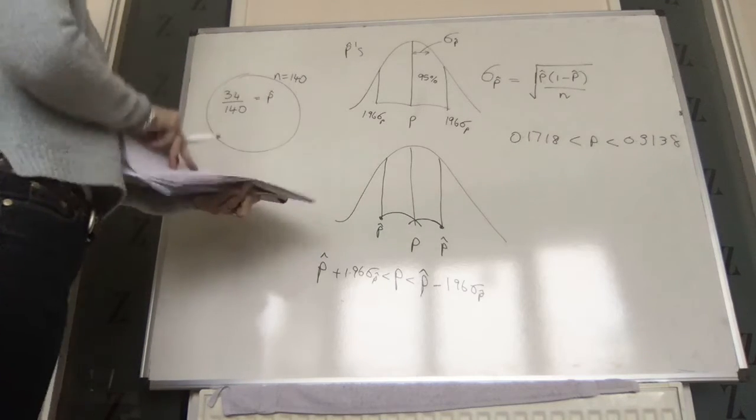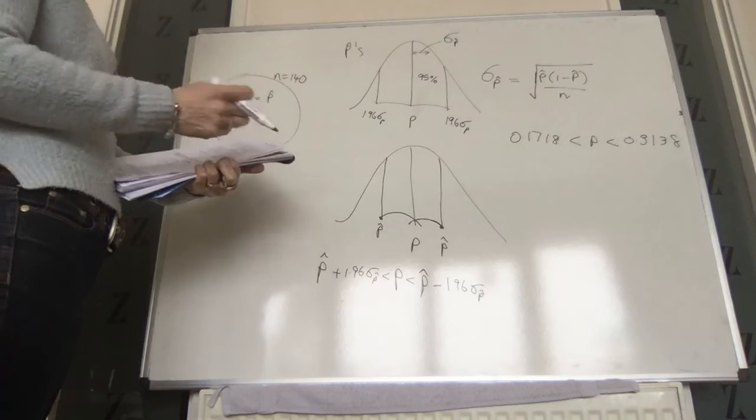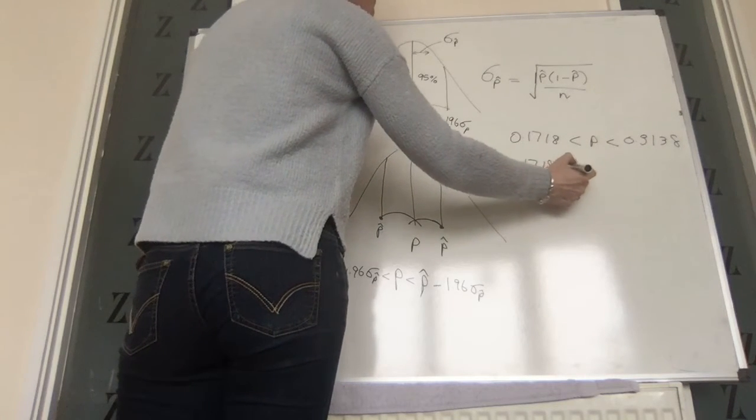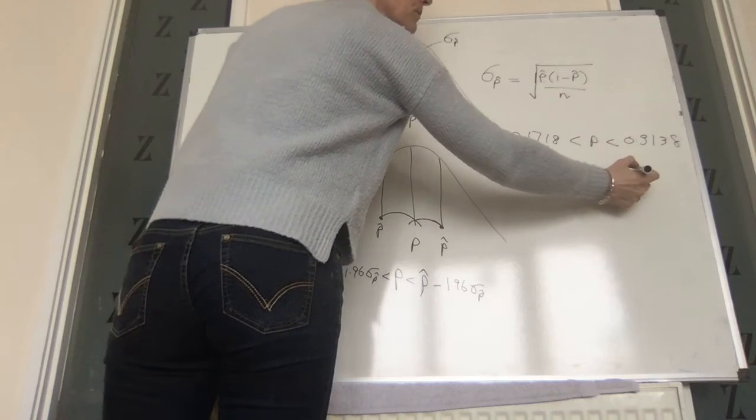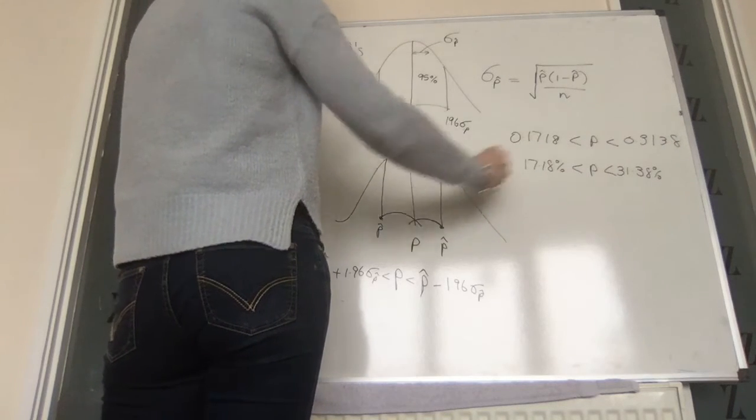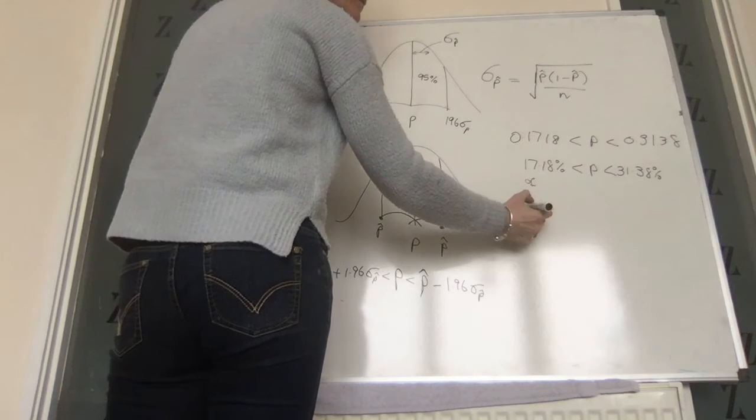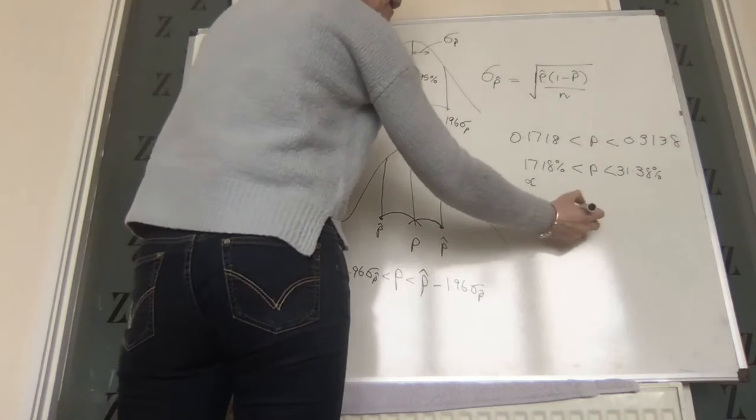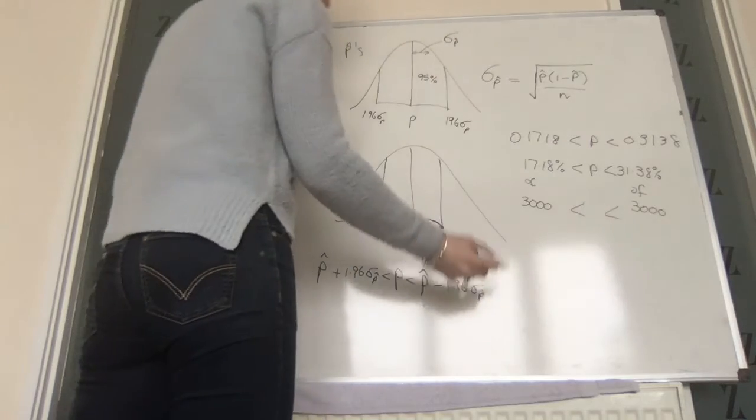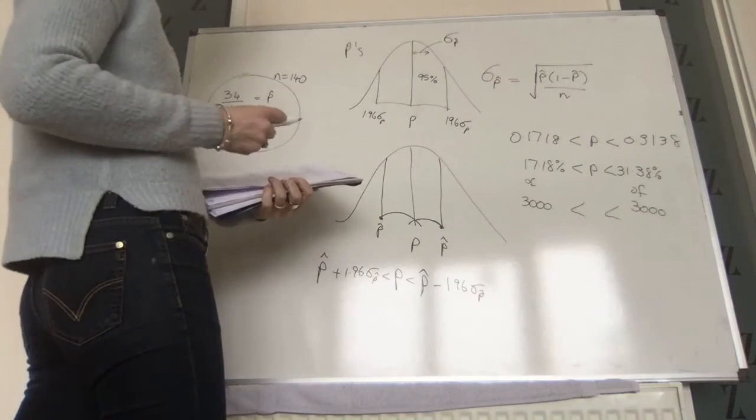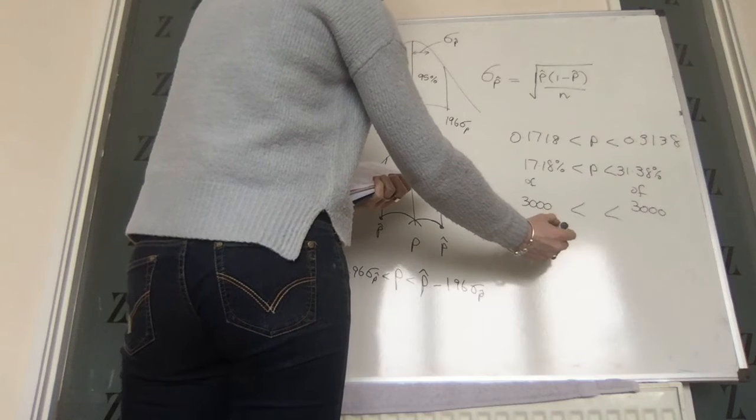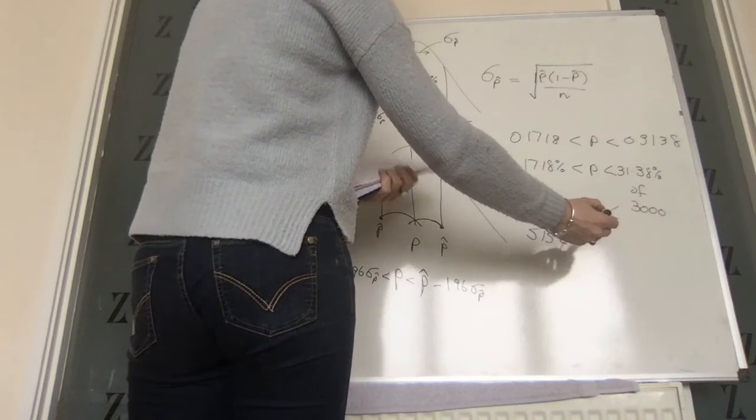The next part of the question says, find the 95% confidence interval for the number of computers that are damaged. Well, we can see here that this is 17.18% and this is 31.38%, because they're proportions. So 17.18% of 3,000 and 31.38% of 3,000. So best case, it's 17.18% of 3,000, which is 515.4.